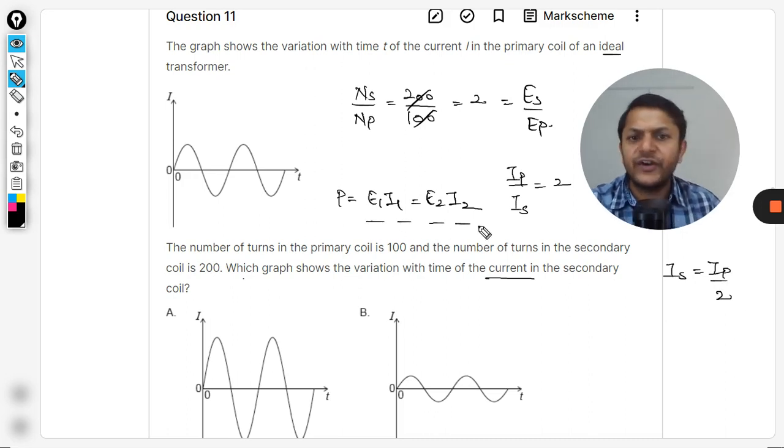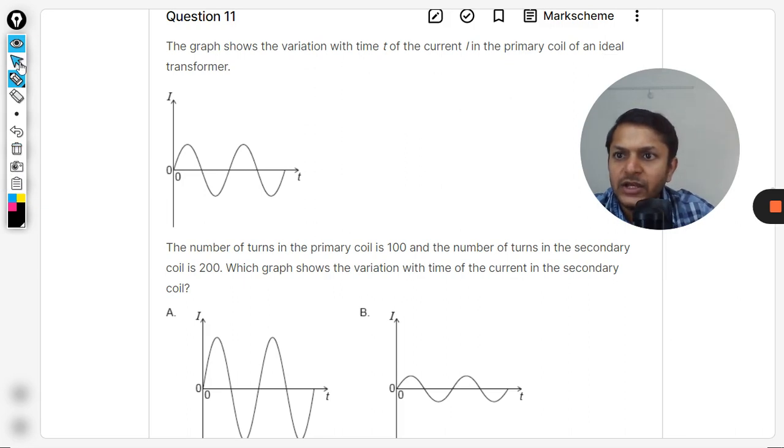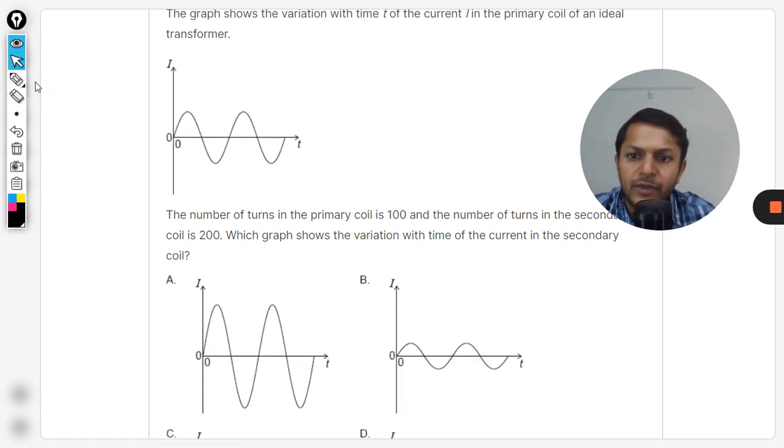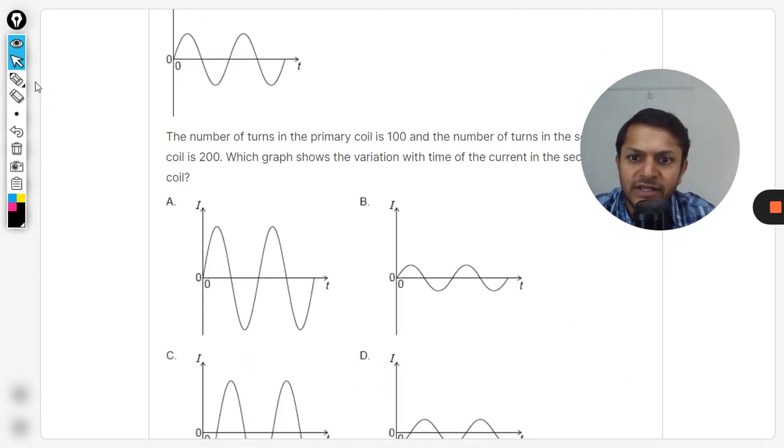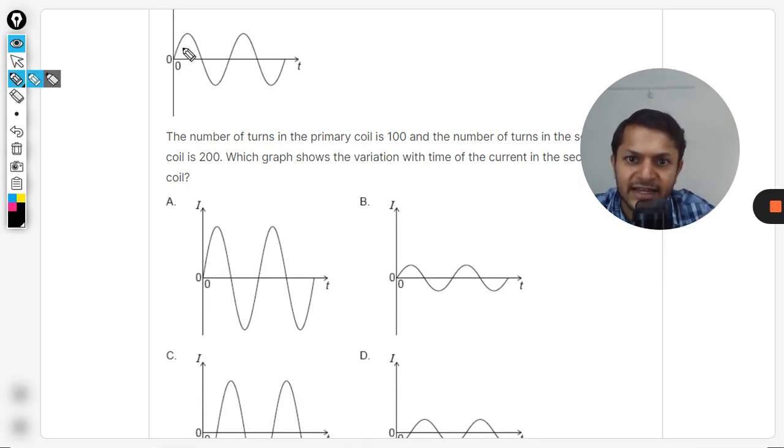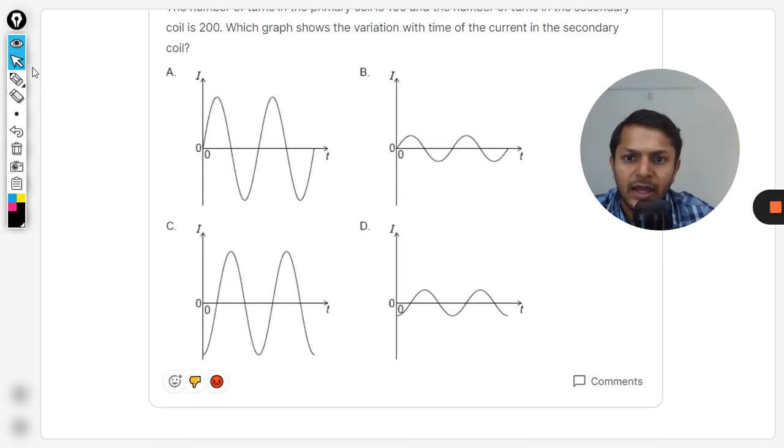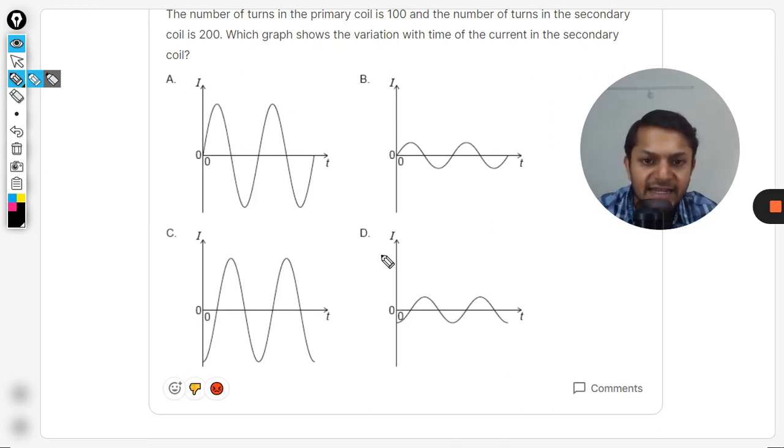You can find it from this relation - current is now getting halved. Now if current is halved, let's move to the options. Current is halved, it means that definitely the magnitude should be even less than this. So B should be correct, A should be wrong, and D can also be correct.